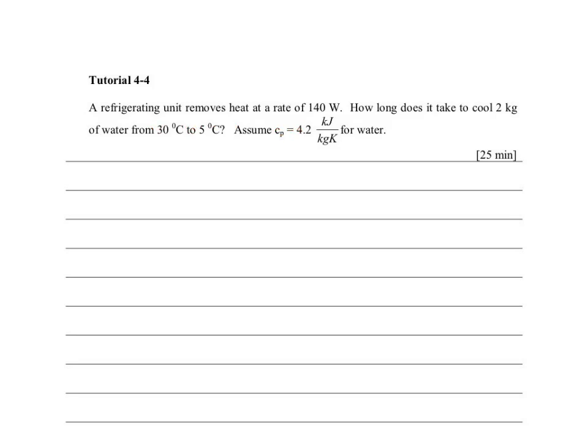We are given the specific heat at constant pressure, as we assume that the heat is being removed at constant pressure, and we are given the specific heat as 4.2 kilojoules per kilogram K for water.